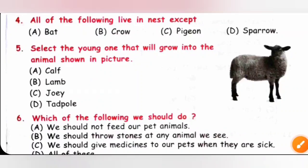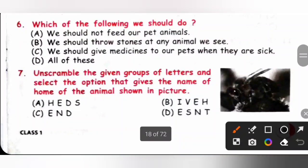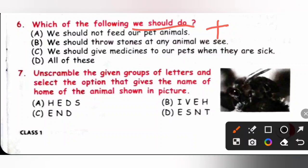Question 6: Which of the following should we do? Option A says we should not feed our pet animals — that is incorrect; we should feed our pet animals. Option B says we should throw stones at animals — no, we should not. Option C says we should give medicines to our pets when they are sick — yes, that is correct. So option C is the correct answer.